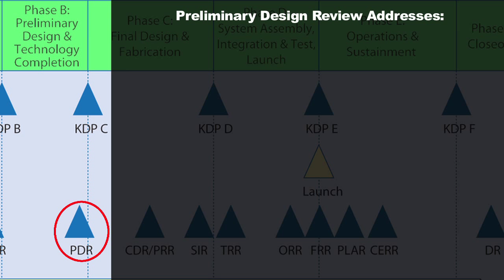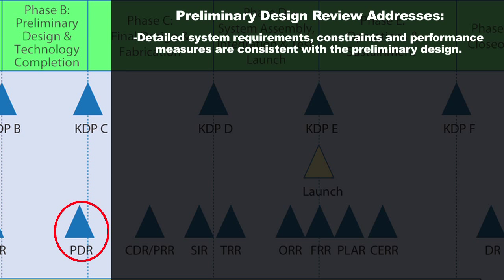At the system-level review, you go through the detailed requirements you've been developing in Phase B — requirements, constraints, and performance measures or values you've put on things like: how much thrust do I need from the thrusters, how much power do I need from the battery? These are performance measures that define what components must be able to perform to be consistent with how the system needs to work overall. All of that will be reviewed at your Preliminary Design Review.